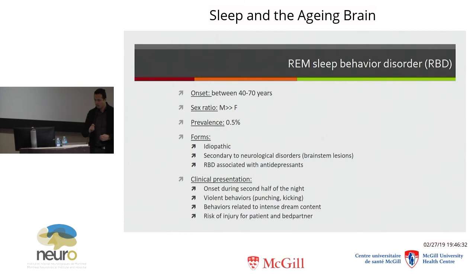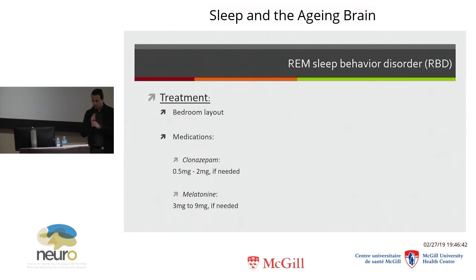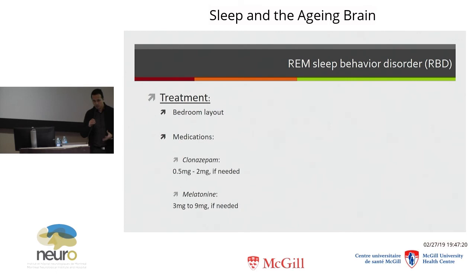What should you do for RBD? Bedroom safety is the first priority — make sure you are not at risk of injuring yourself or your bed partner. Avoid sharp objects around the bed, and consider sleeping in a low bed or one with rails in case you fall out. Sleeping in separate beds can also be useful. Medications are used only when RBD becomes frequent and disrupts sleep — typically drugs acting on the GABA system like clonazepam, and melatonin has also been shown to work in some studies, though the mechanism is not yet clear.